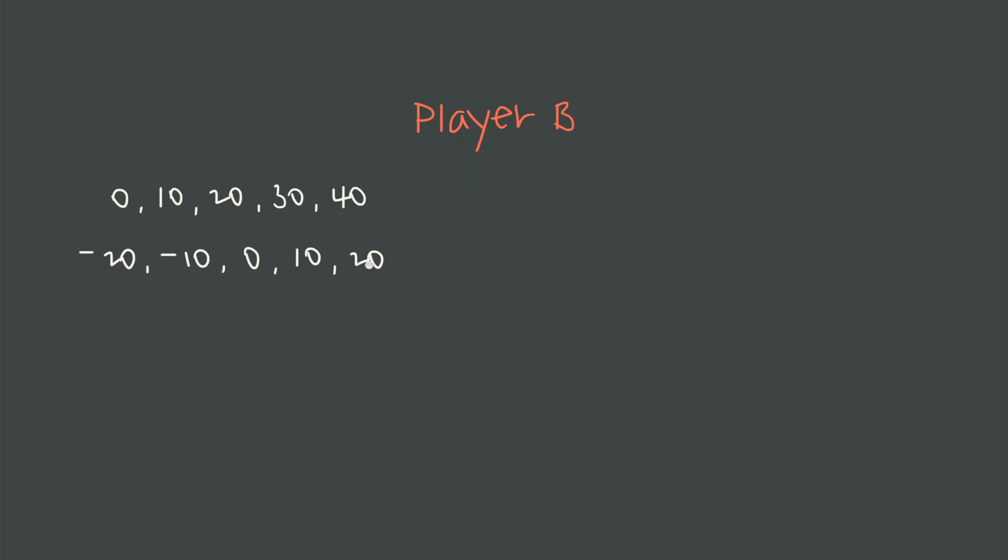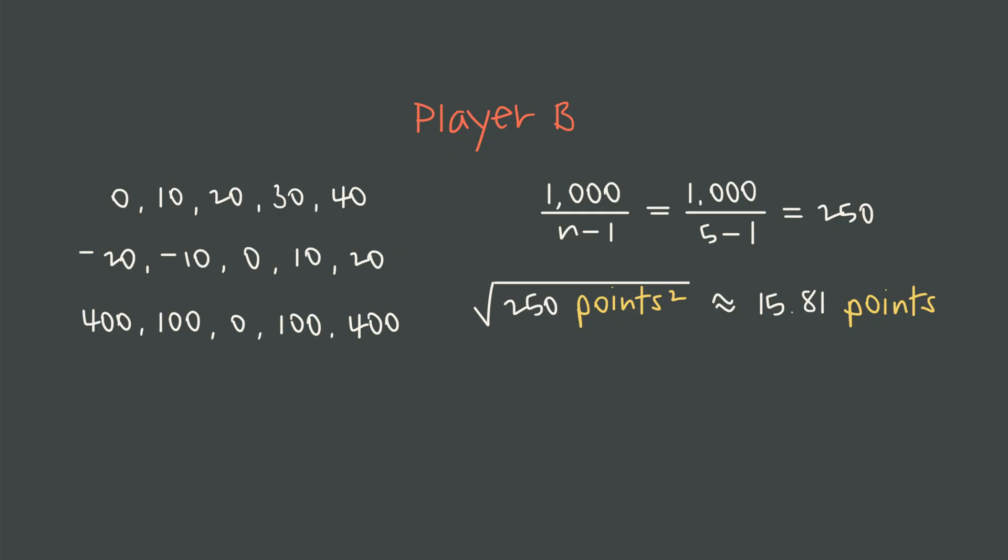These are the deviations for player B. Therefore, the squared deviations are 400, 100, 0, 100, and 400. If we add up those deviations, we get 1,000. Then, remember, we divide by n minus 1, not just n, but n minus 1 to address our degrees of freedom issue. So 1,000 divided by 5 minus 1, or 1,000 divided by 4, is 250. But remember, 250 has units of points squared. So we need to take the square root of 250 points squared to find approximately 15.81 points, and that is player B's standard deviation. Compared to player A's standard deviation of 1.41 points, we can see player B's standard deviation is a much larger number, which confirms what we saw with our own eyes, which is that player B's performance is far less predictable than player A's.